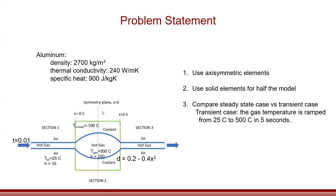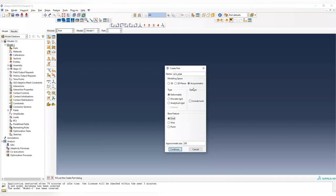We're also going to apply symmetry here. Since this tube is very long, we just model one meter for the analysis — that is enough to simulate the temperature change inside the tube. For symmetric thermal conditions, the heat flux should be equal to zero. Now let's see how to do it in Abaqus.